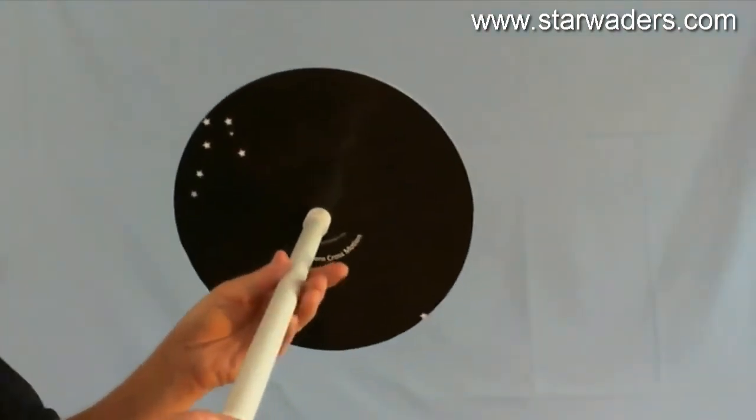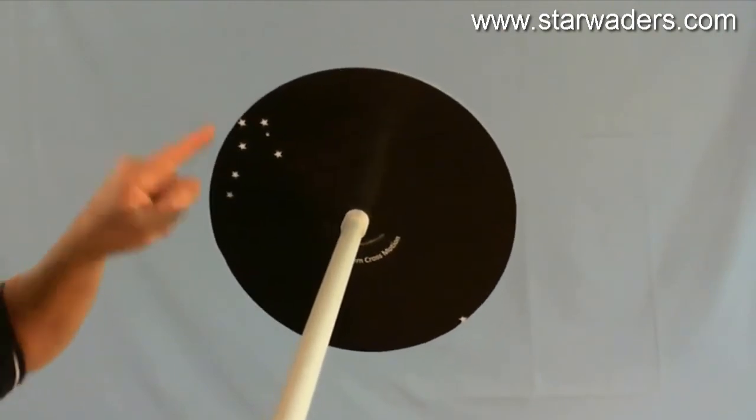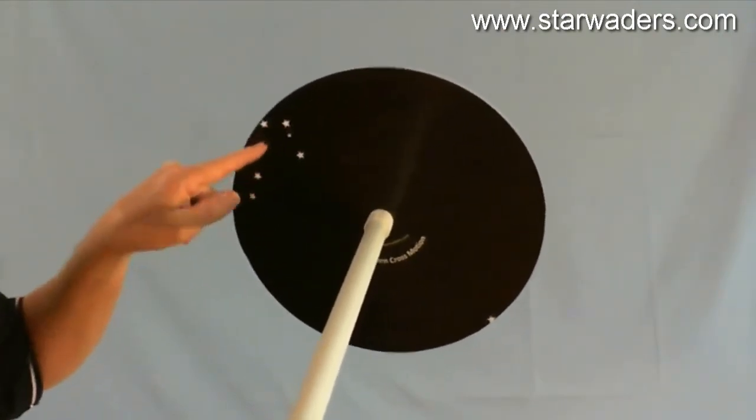What you would notice with the Southern Cross: we have the two pointers, we have the long arm of the cross, and we have the short arm of the cross.